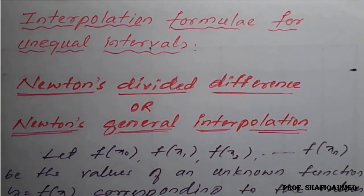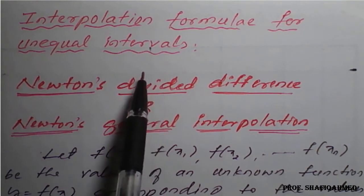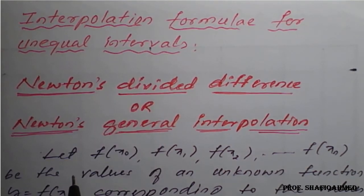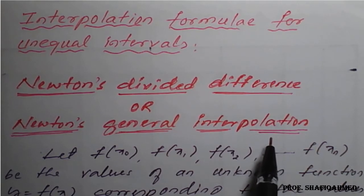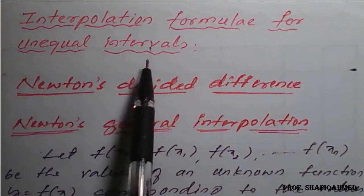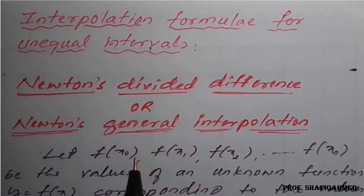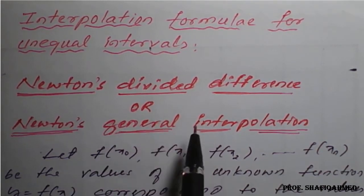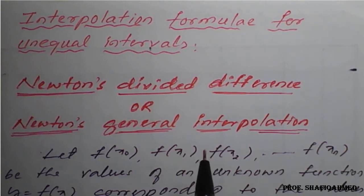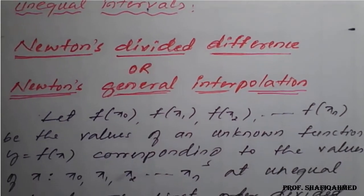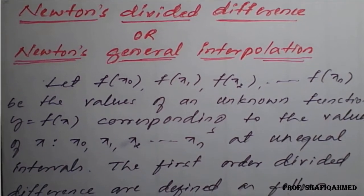We will see interpolation formulas for unequal intervals. Here we have a few more methods to apply for unequal intervals. The first one we will see is Newton's divided difference, or Newton's general interpolation formula. This formula we are going to apply for unequal intervals — that is, when the step size of the given variable x is not the same. At that time, this method is suitable to get the required interpolation results.